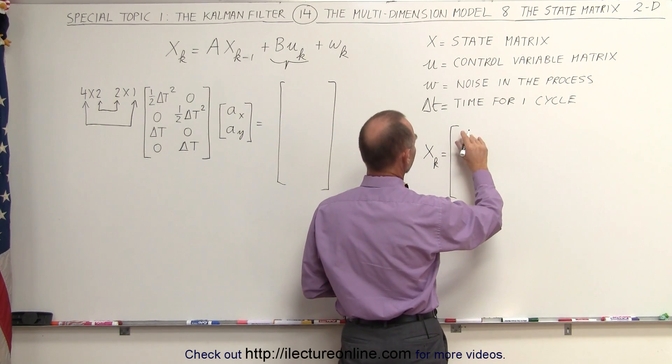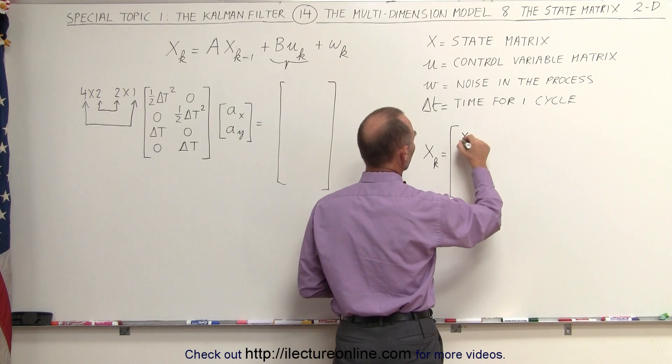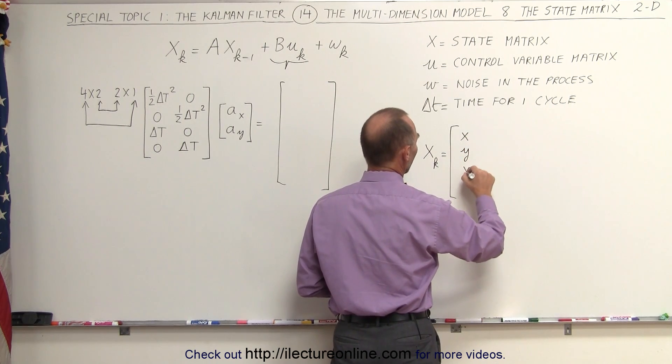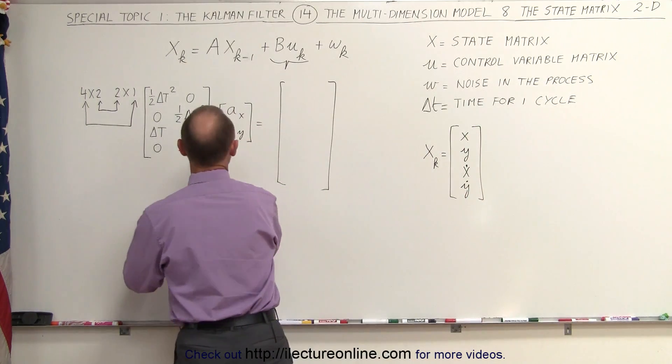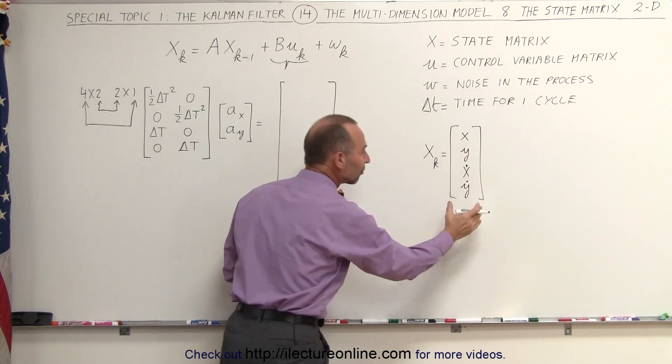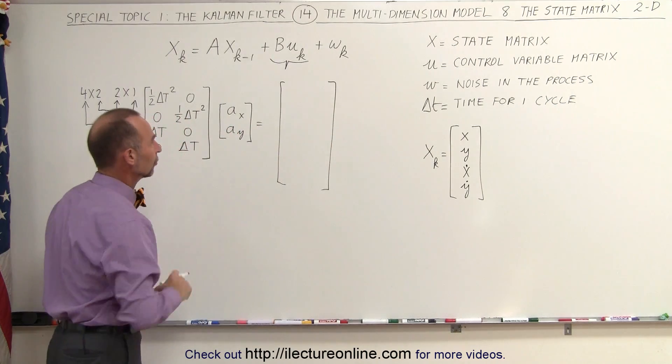That would be the x position, the y position, the velocity in the x direction and the velocity in the y direction. And then this multiplication will make adjustments to these from the previous state to the current state.